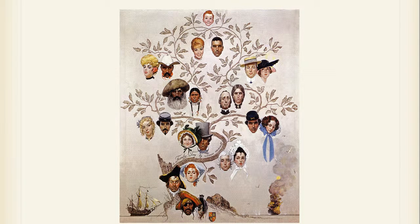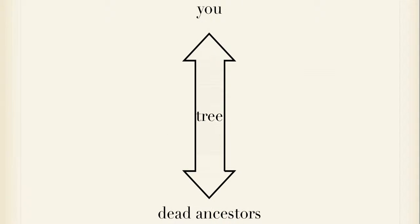Family trees are what are called pedigree charts. They follow a bloodline in one direction. This example starts with a youngster and goes backwards in time to his ancestors. That's what makes it a tree.